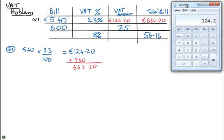Now, for the second question, we're told the bill was €600, and the amount of VAT paid was €75. So what we're looking for is how much is the VAT percentage? So for question 2, what you're looking for is, what percentage of 600 is 75?